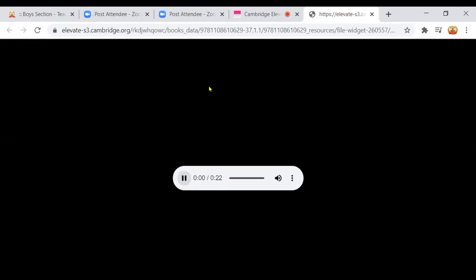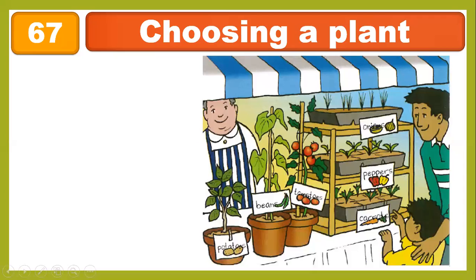Track 67: 'What is this?' 'This is a bean plant.' 'What are these?' 'These are carrot plants.' 'Which do you like better, beans or carrots?' 'Beans.' 'Okay, we'll get the bean plant.'